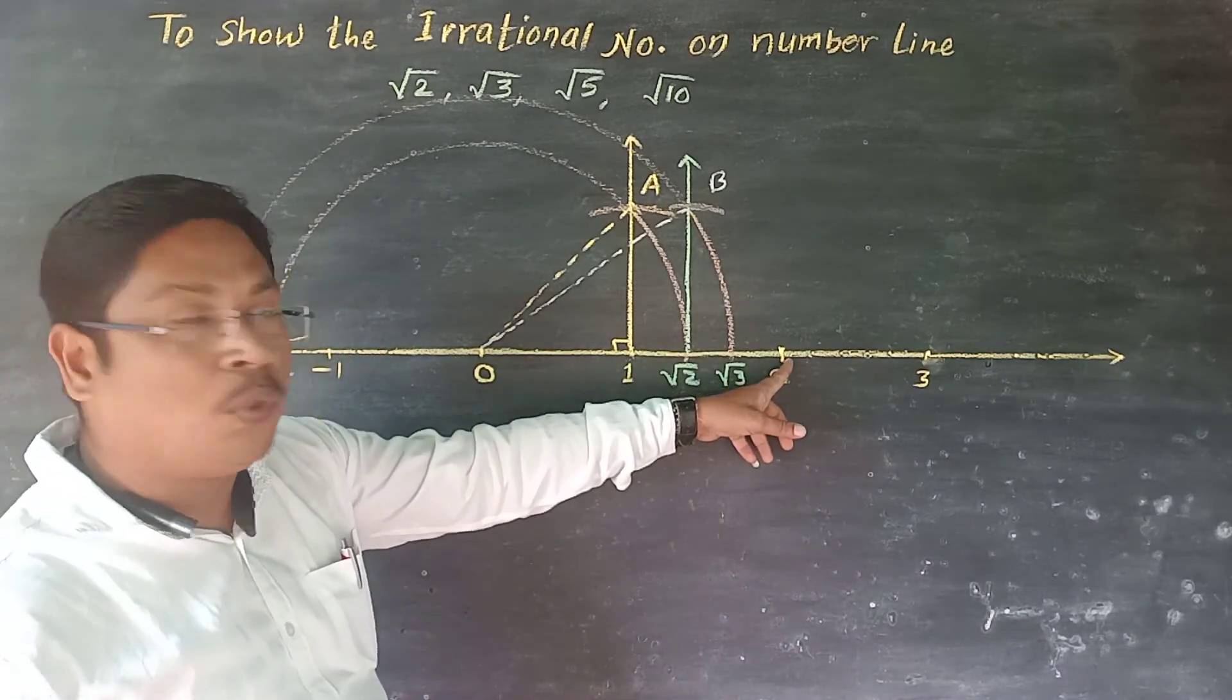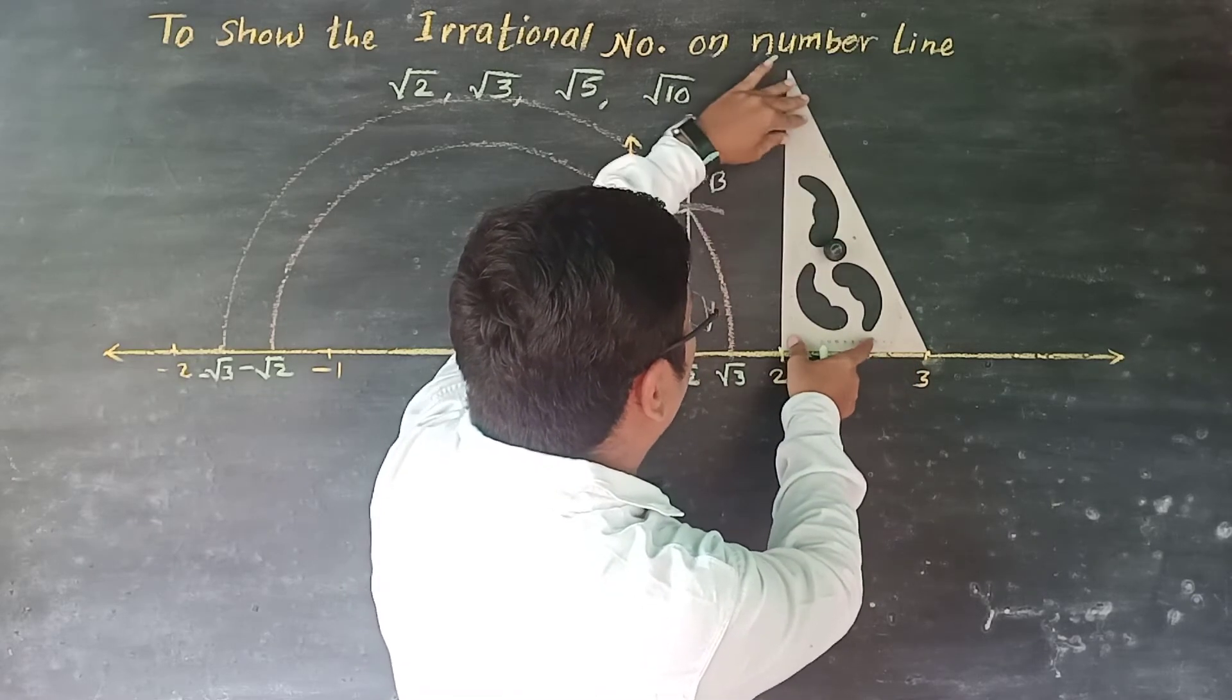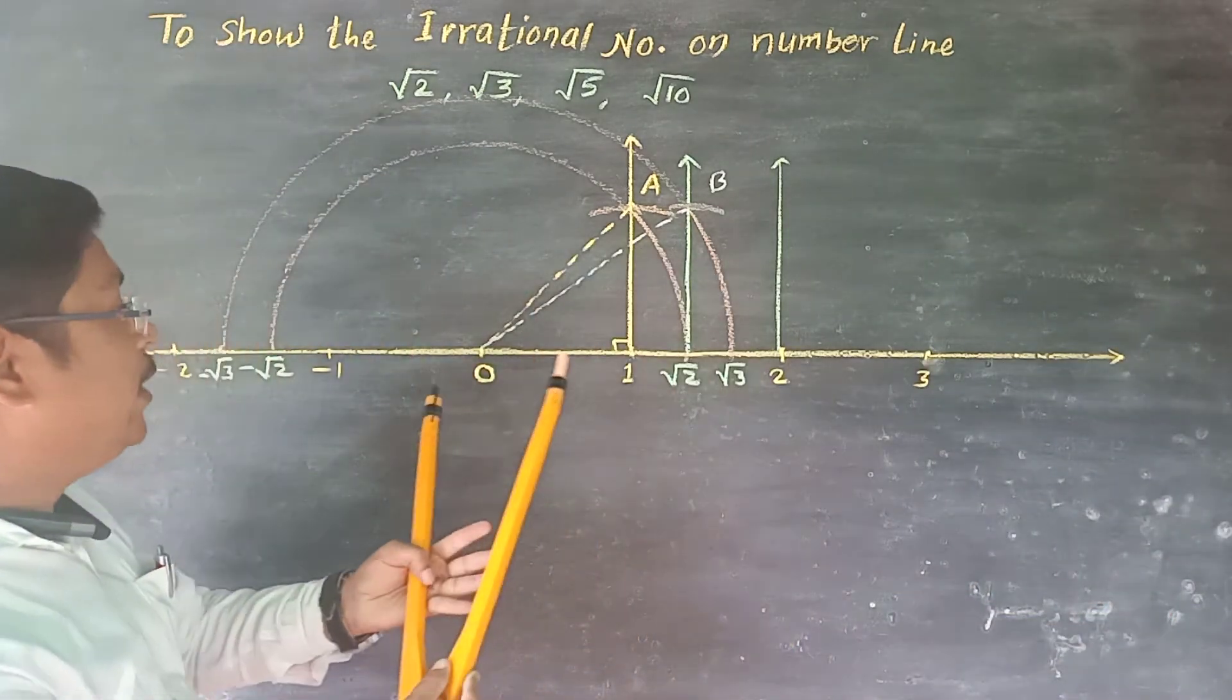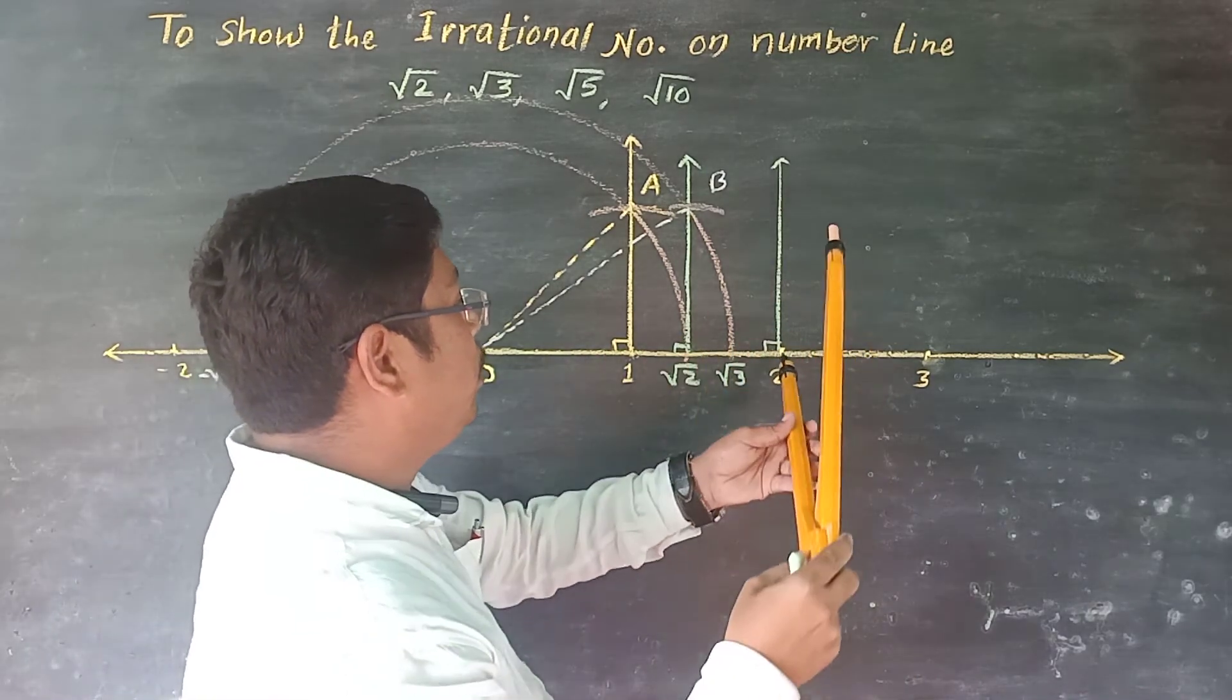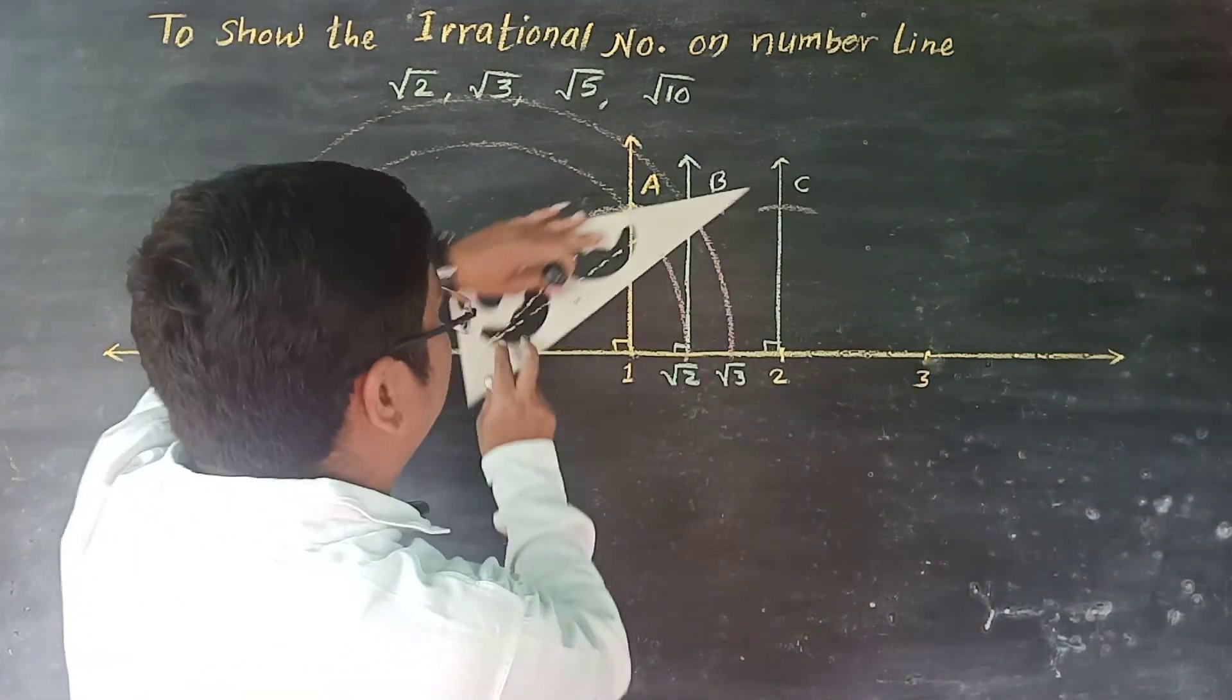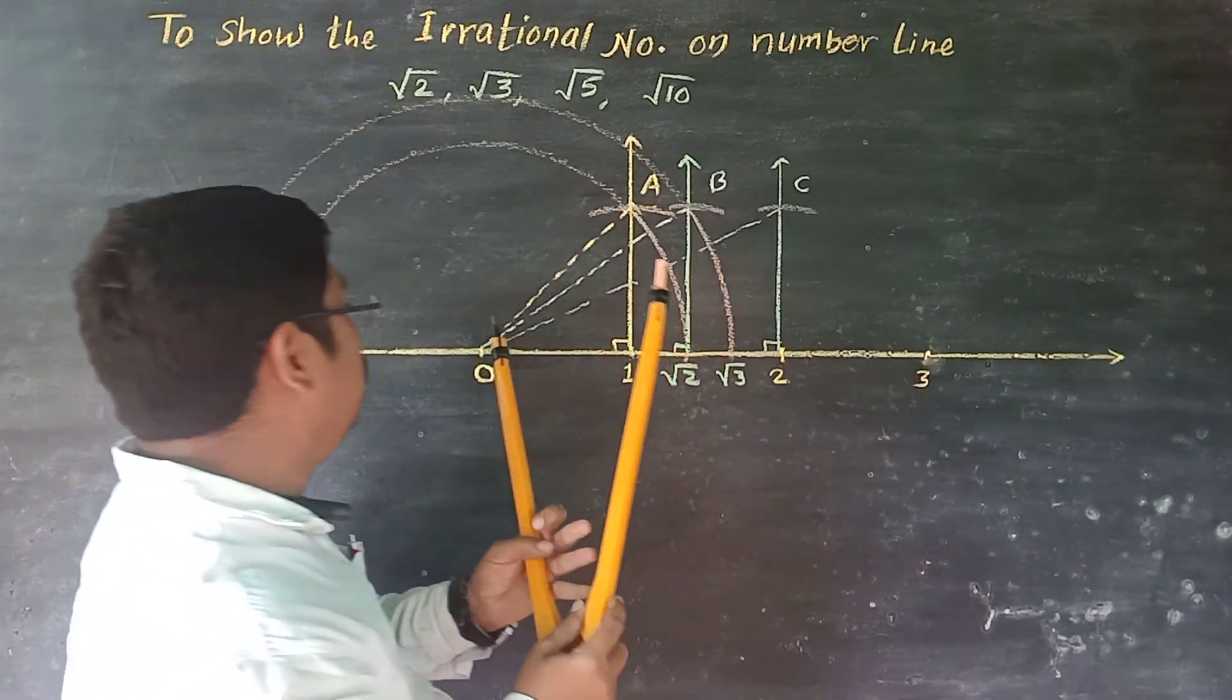From here we repeat the procedure. Draw perpendicular. From two we get root four. The distance from zero to positive one is the unit distance. Draw perpendicular to the line. Here we get the point C. Draw a line from zero through C. The distance from zero to C gives us the value.